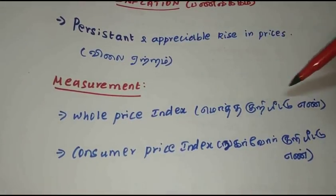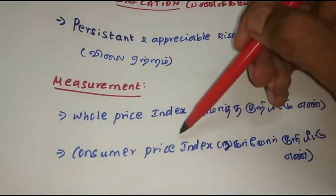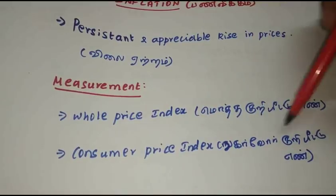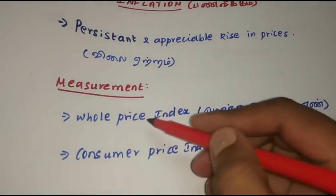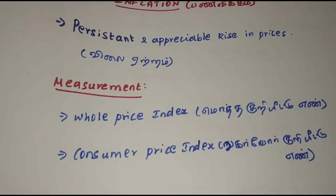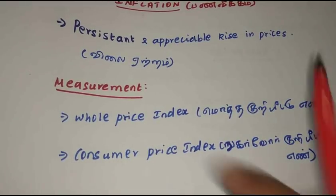First, the Consumer Price Index. Next, the Consumer Price Index — let's say the same price index. In 2014, the WPI was revised. Here is the rule of inflation measurement.